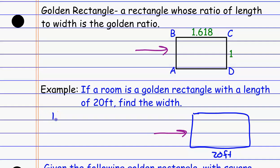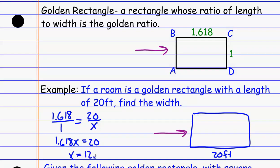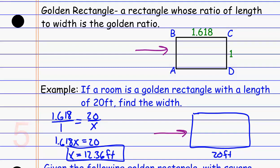I just use that same ratio: 1.618 compared to 1 should equal the long side compared to the short side on my rectangle. Cross multiplying gives 1.618 times x equals 20, then I divide each side by 1.618. Using the ratio and the fact that all golden rectangles are similar, I find that x should equal approximately 12.36 feet. So if you have a room that's about 20 feet by 12.36 feet, it's probably your favorite room because it's the golden ratio.